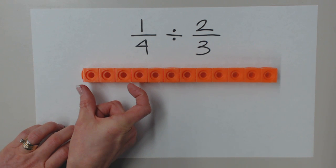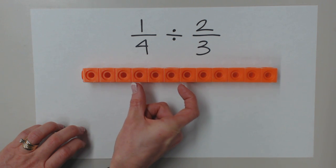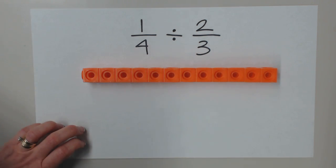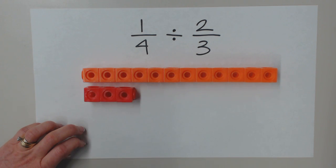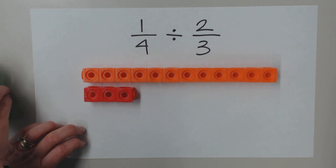If I partition this unit of one into four congruent pieces, we can see that my fourth piece will have three cubes in it.